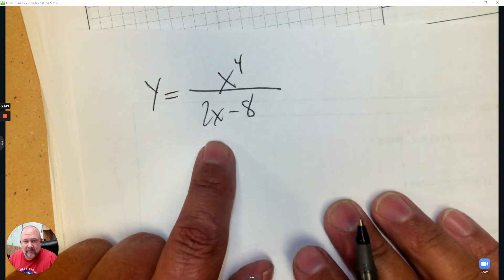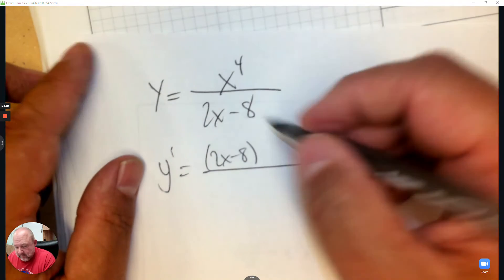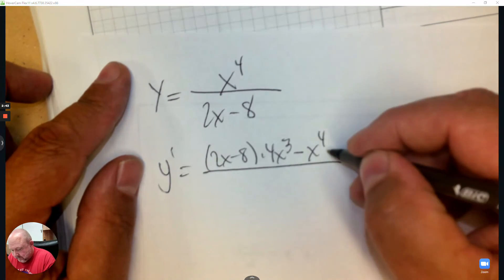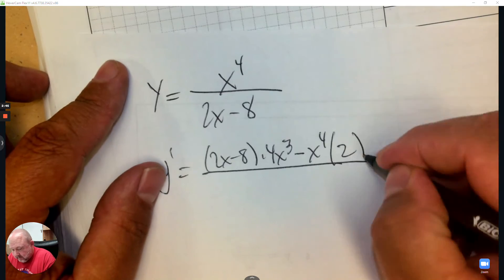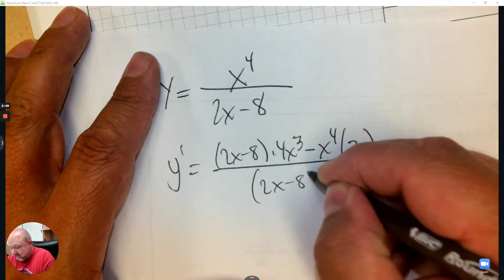So I want to be able to take the derivative of this, so we go the bottom times the derivative of the top minus the top times the derivative of the bottom, and then take the bottom and square it. That's it.